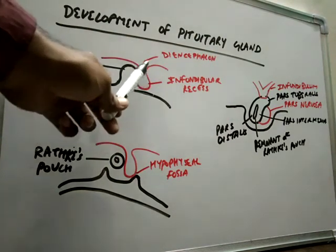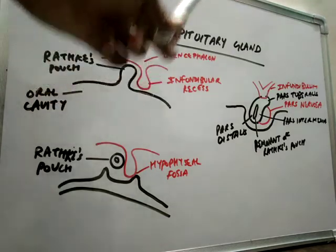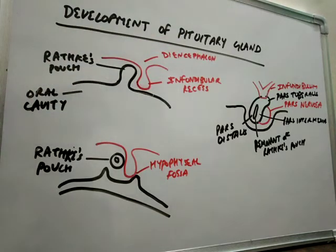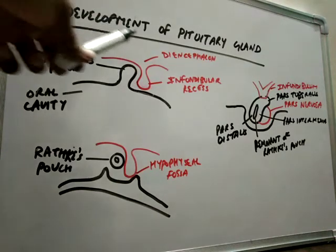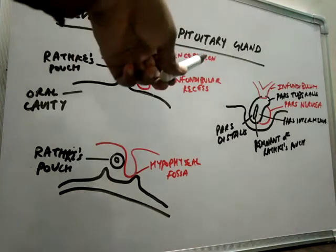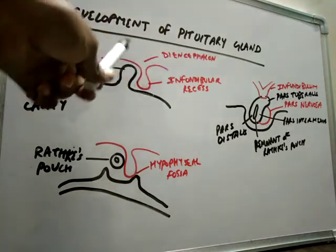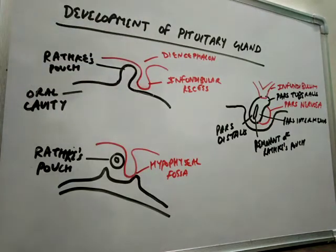The infundibular recess, shown here in red, develops from the floor of the diencephalon. It grows downward from the floor of the diencephalon, which is located above.